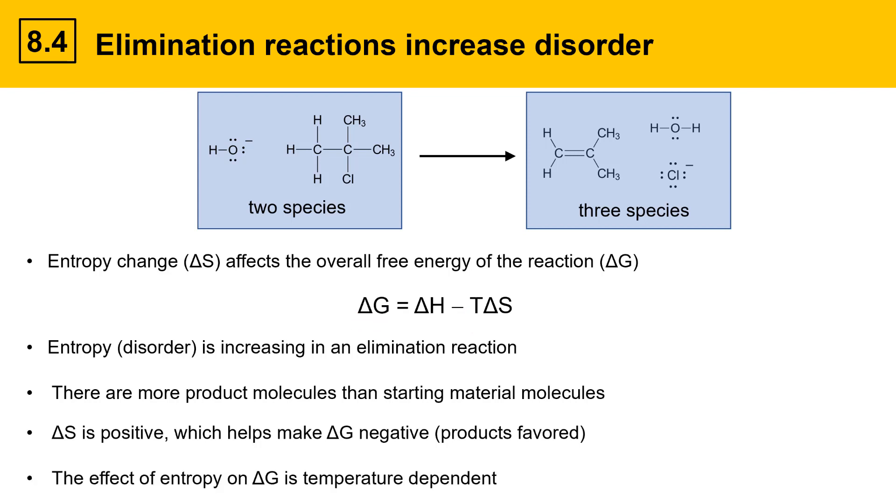The effect of entropy on delta G is temperature dependent. The T term here determines the magnitude of the effect of the entropy change. So, at higher temperatures, elimination reactions are more favored.